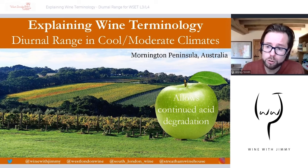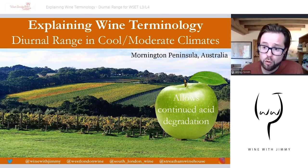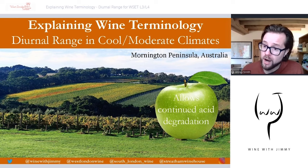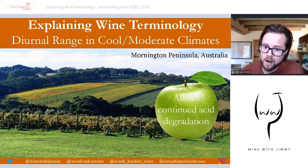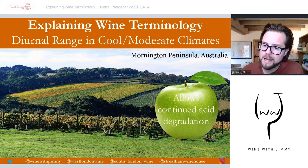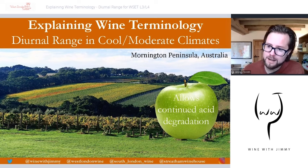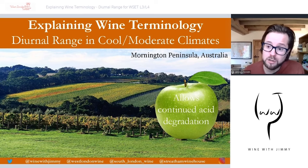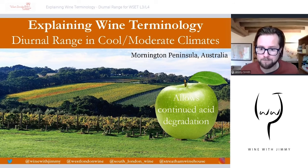In cool or moderate climates — below 18.5°C for moderate and below 16.5°C for cool, such as the Mornington Peninsula in Victoria, Australia, or the Mosel in Germany — a low diurnal range is favorable. The nighttime temperatures will still allow ripening, so there is a longer, more elongated ripening period. This means better acid degradation — a reduction of the acids which may be too high in these exceptionally cool places — allowing continued degradation of acidity.